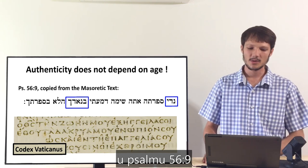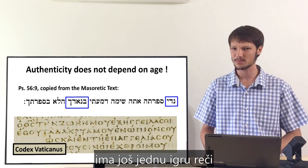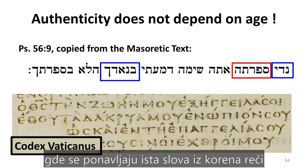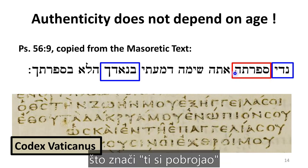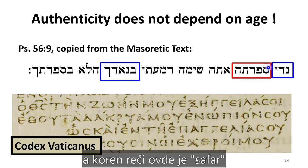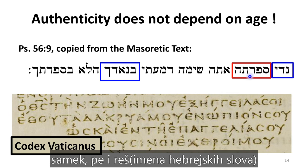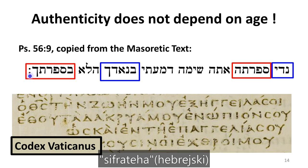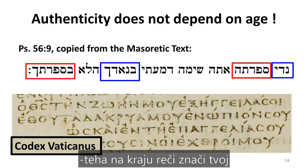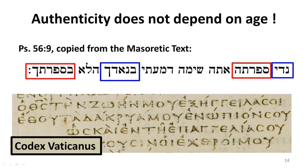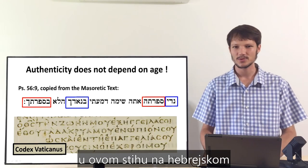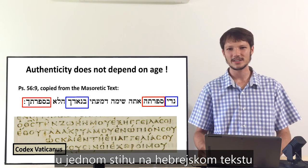Psalm 56 verse 9 also contains a second Hebrew wordplay called internal rhyme or paranomasia, where the same root letters are repeated. The word 'safarta' means 'you have numbered or counted,' with root letters Samek, Pei, Resh. Then at the end of the verse, 'besifratecha' contains 'sifra,' meaning 'book,' from the same root Samek, Pei, Resh. So the same root word is repeated twice in this verse — there are two Hebrew wordplays in this single verse.